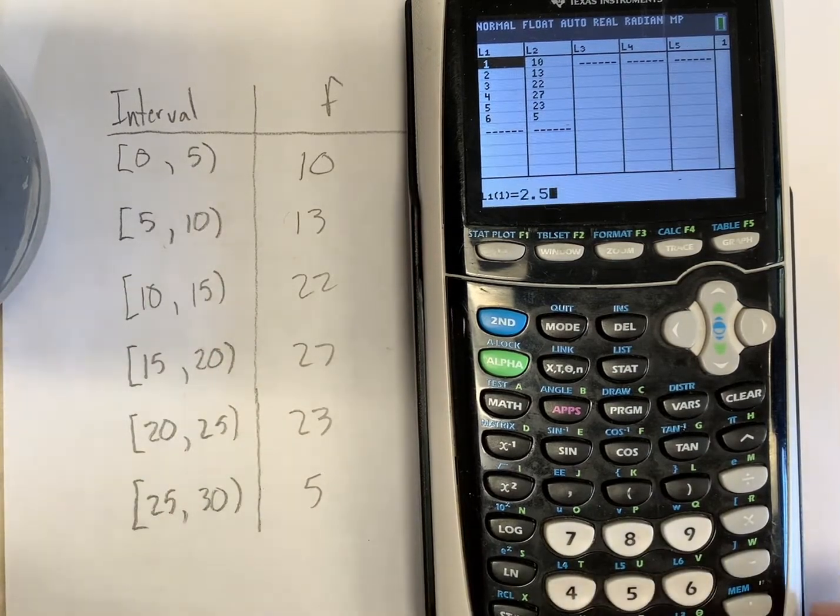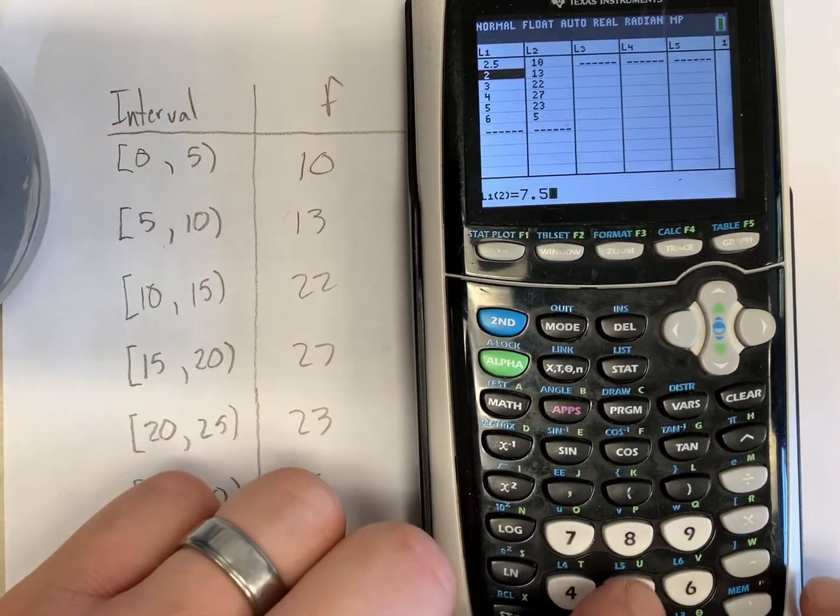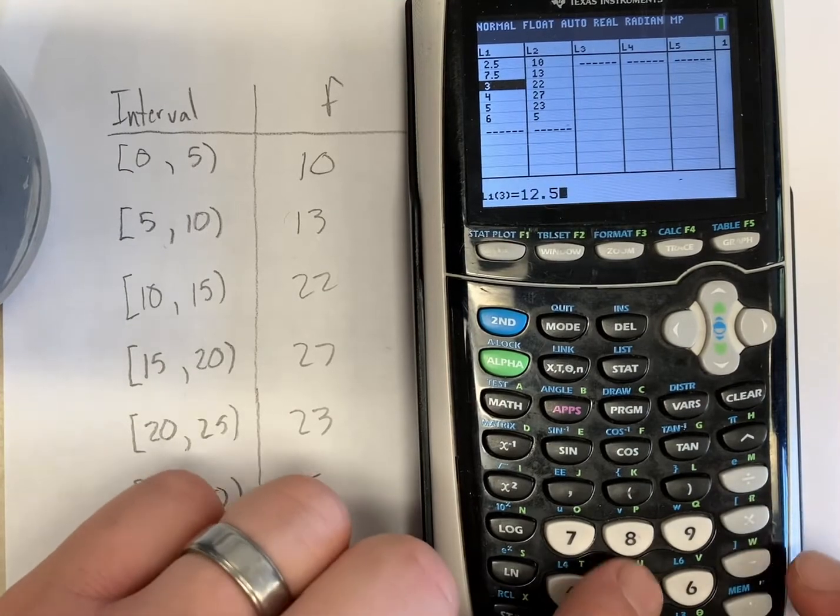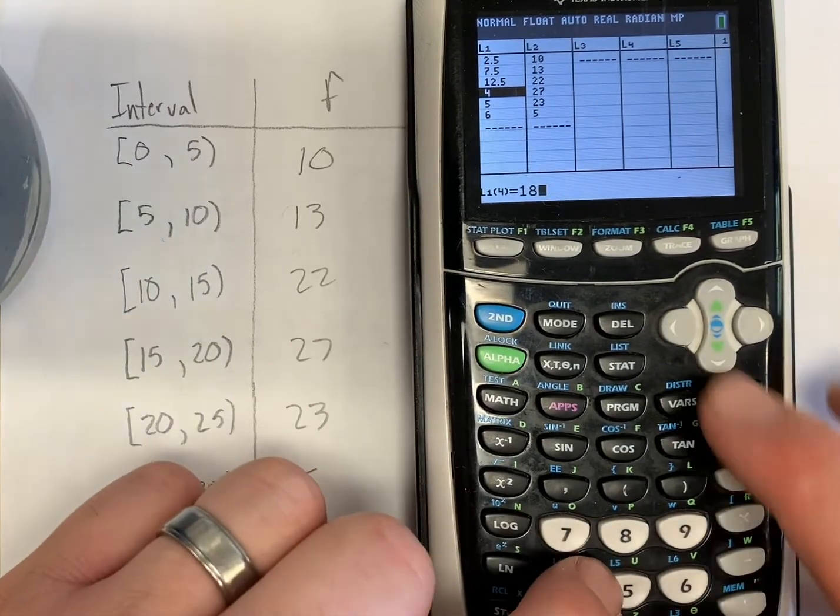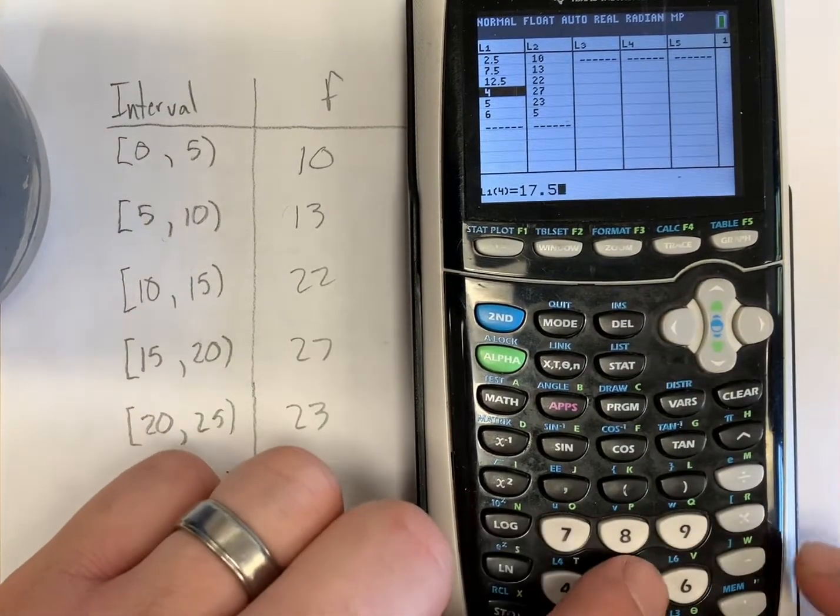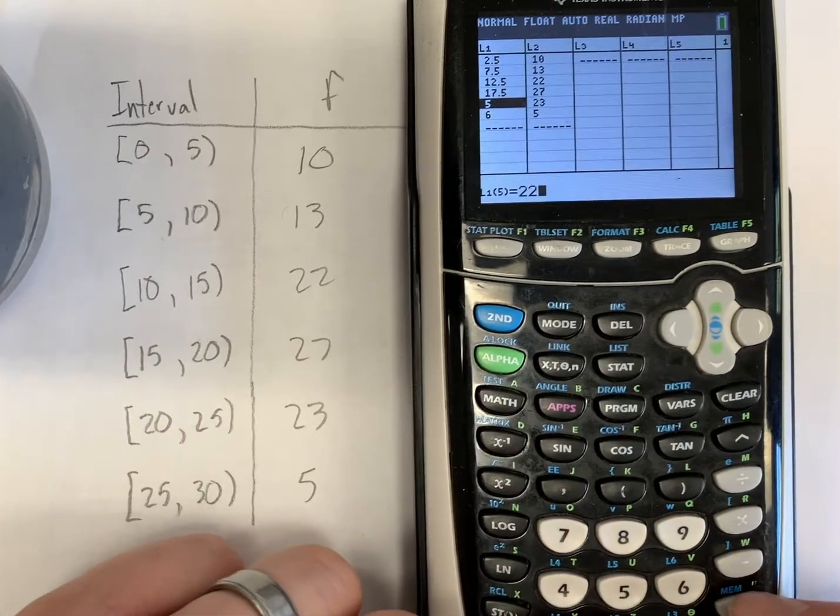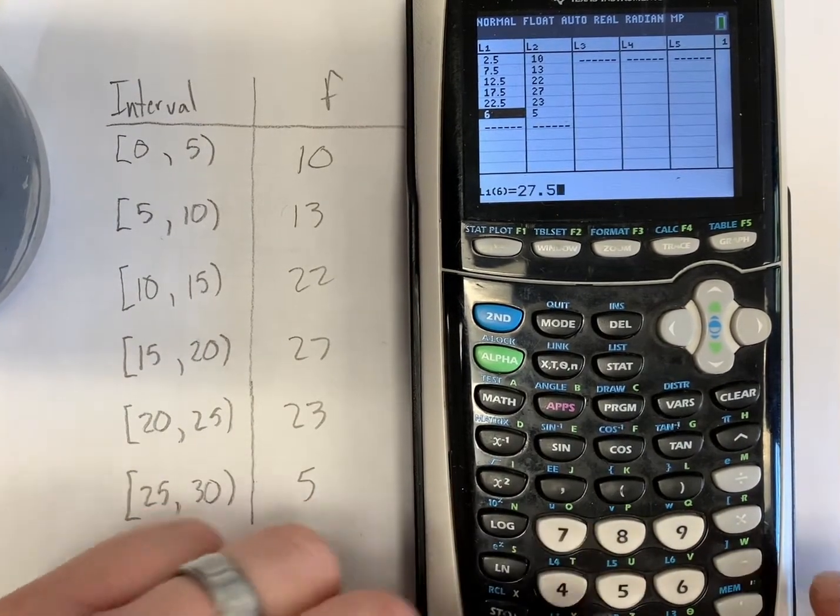So you do 2.5, 7.5, 12.5, 17.5 not 18.5, 22.5 and 27.5.